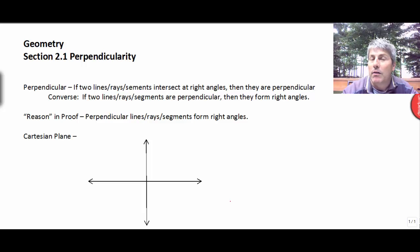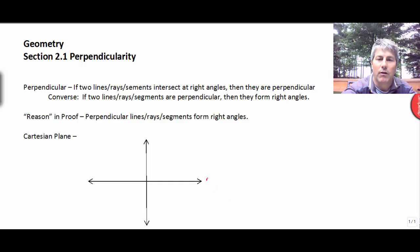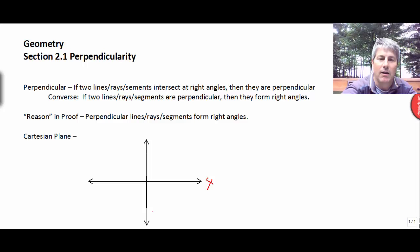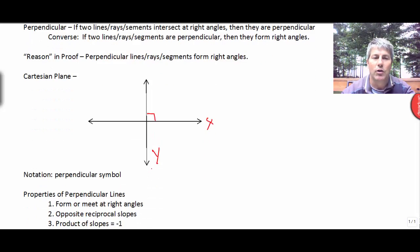An example of two lines that are perpendicular, of course, is the Cartesian plane. Your Cartesian plane with your x-axis and your y-axis form right angles. And that's something that you already knew.